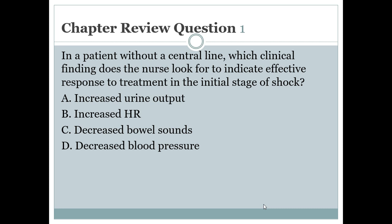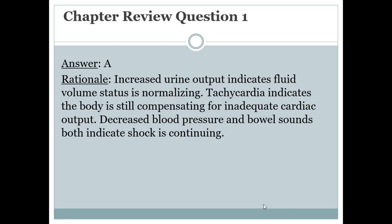Review question 1: in a patient without a central line, which clinical finding indicates effective response to treatment in the initial stage of shock? The answer is increased urine output — it indicates fluid volume status is normalizing. Tachycardia indicates the body is still compensating for inadequate cardiac output. Decreased blood pressure and bowel sounds both indicate shock is continuing.